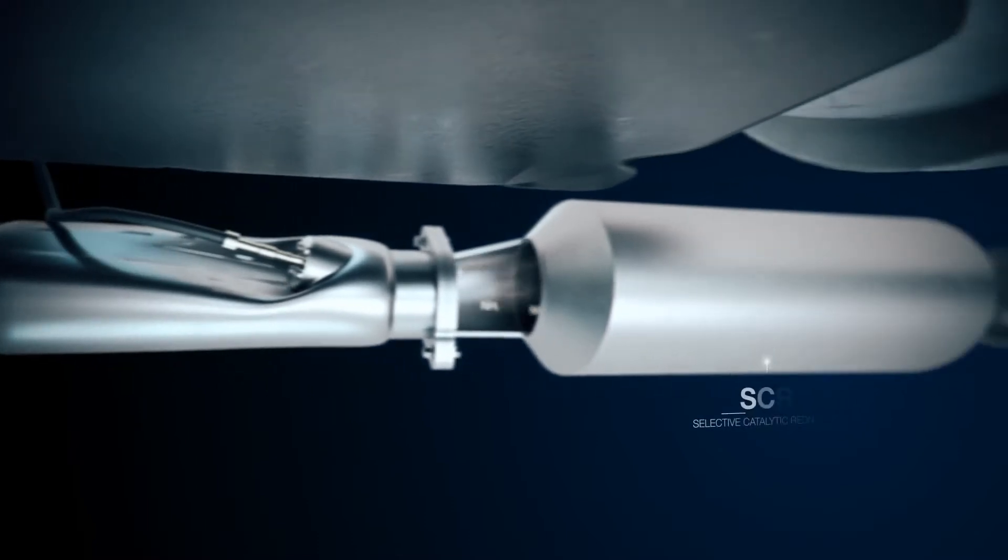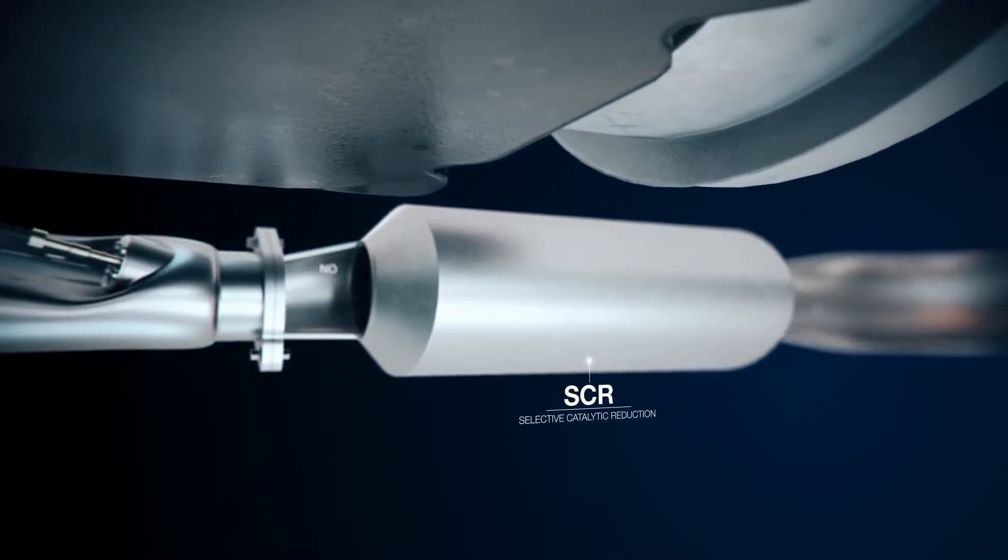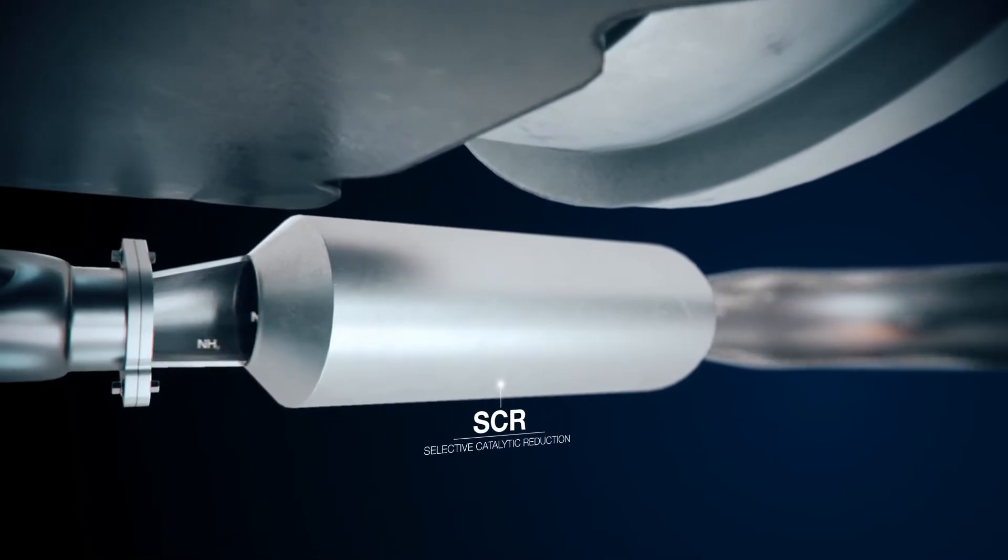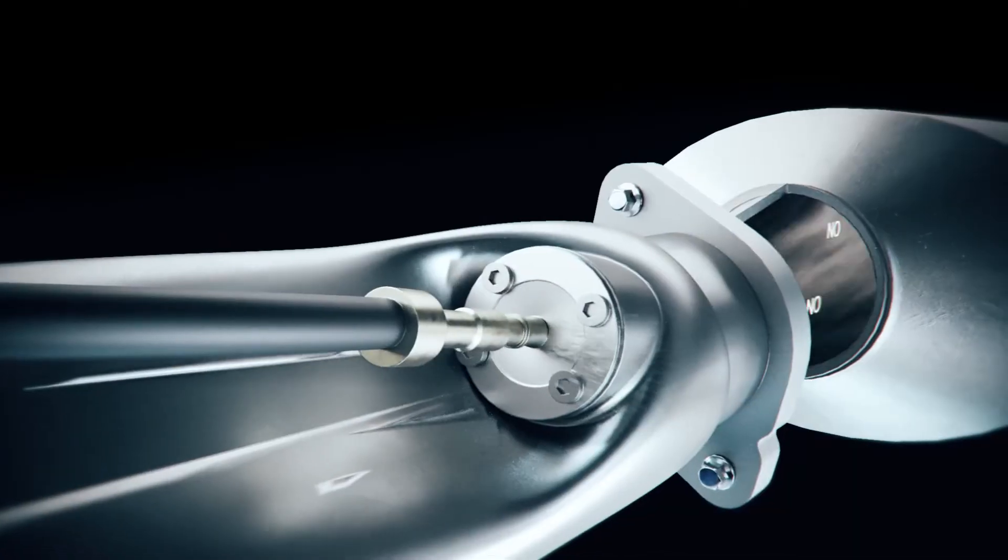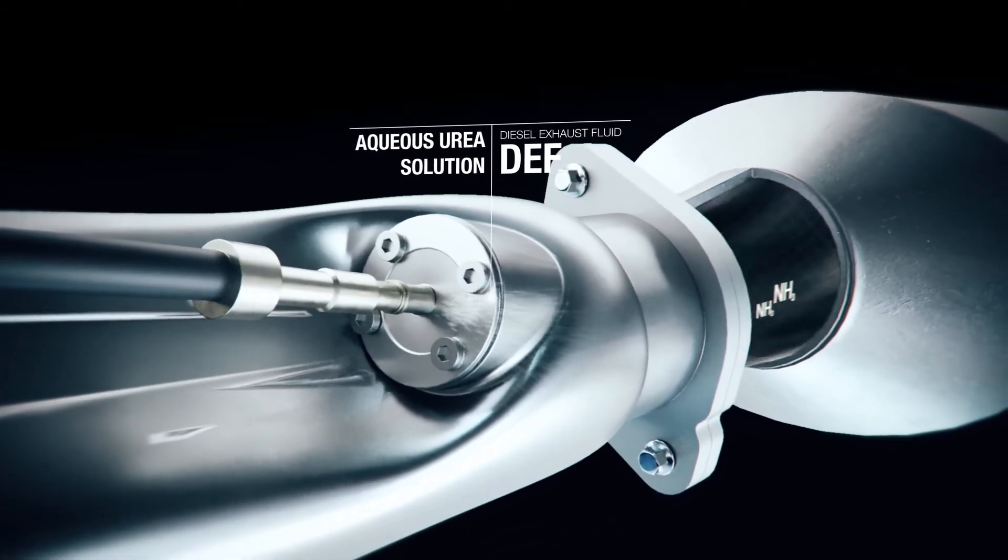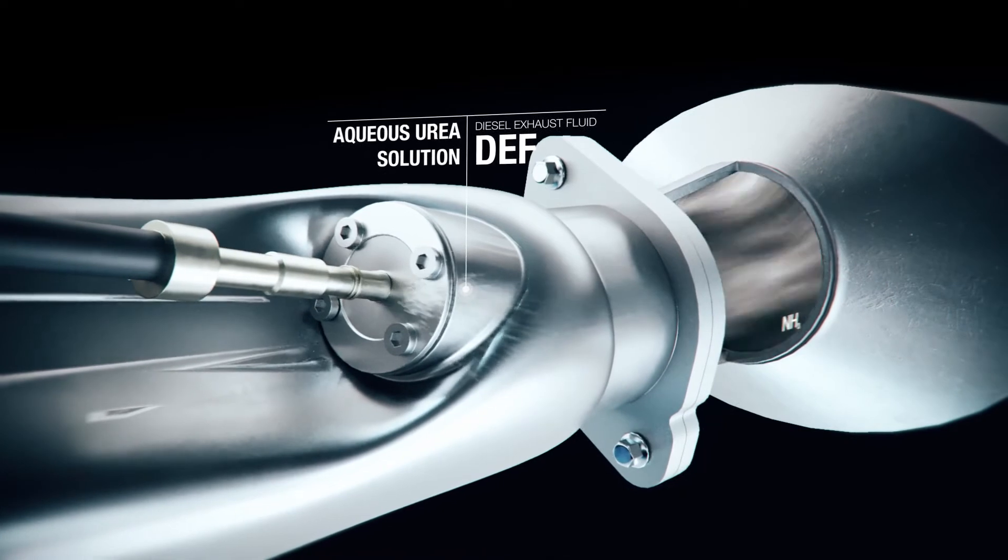Finally, the exhaust passes through a selective catalytic reduction or SCR, a technology designed to reduce NOx emissions from vehicles. The process begins with hot exhaust gases getting mixed with an aqueous urea solution known as diesel exhaust fluid or DEF, which then enters the catalytic converter.